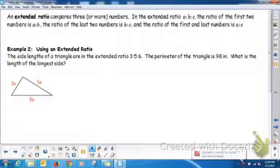So let's use an extended ratio here. The lengths of the side lengths of our triangle are the extended ratio 3 to 5 to 6. The perimeter of the triangle is 98 inches. What's the length of the longest side? Well, the longest side here would be this one, 6x. If the perimeter around the entire triangle is 98 inches, how do we find out what each part is?